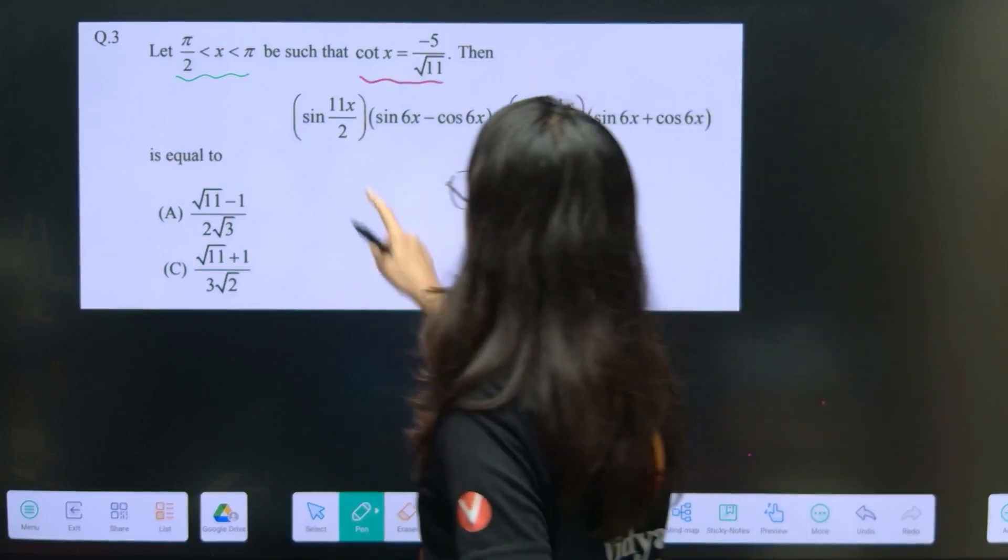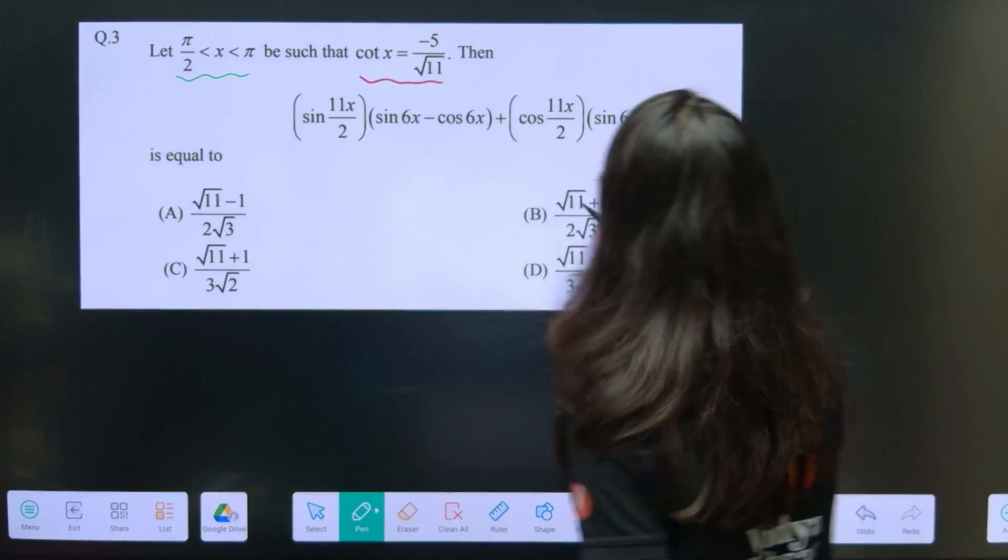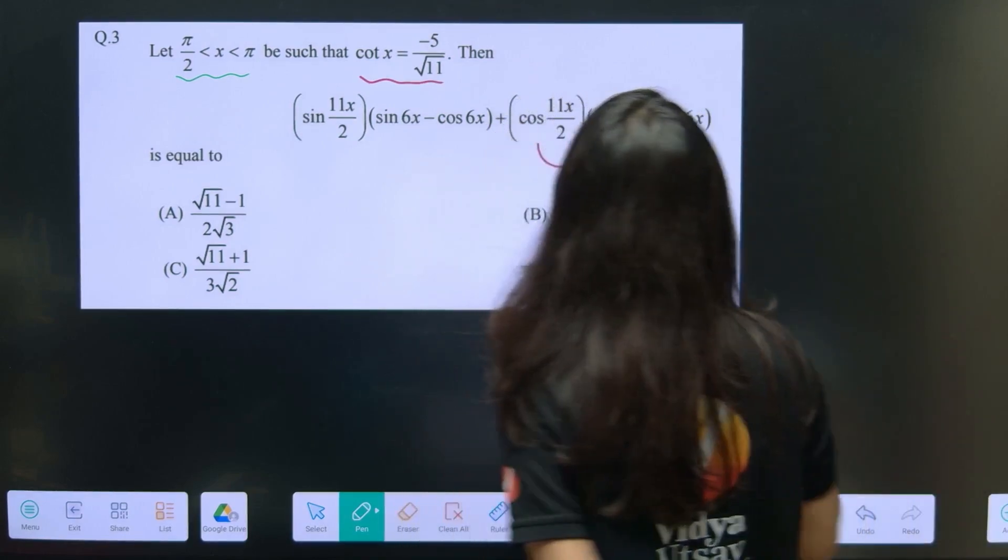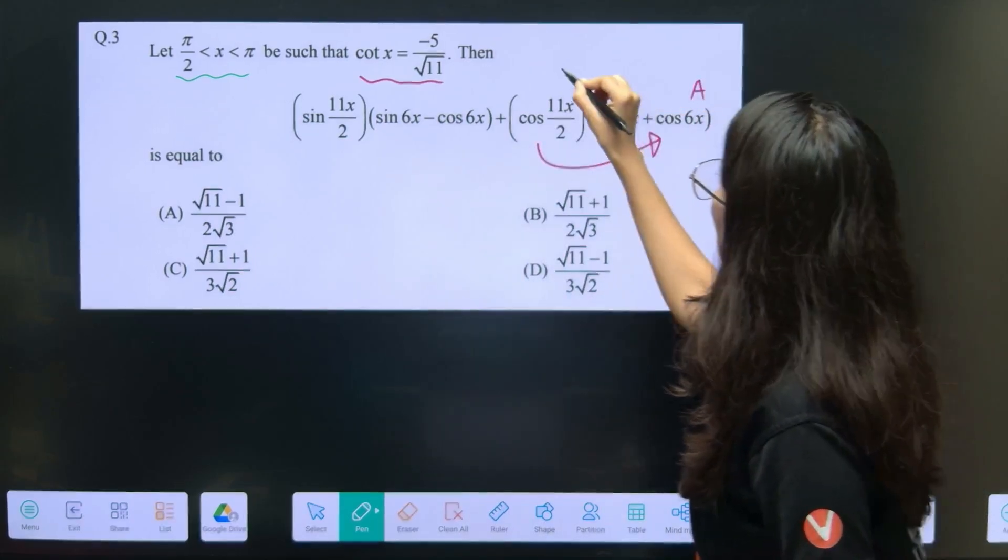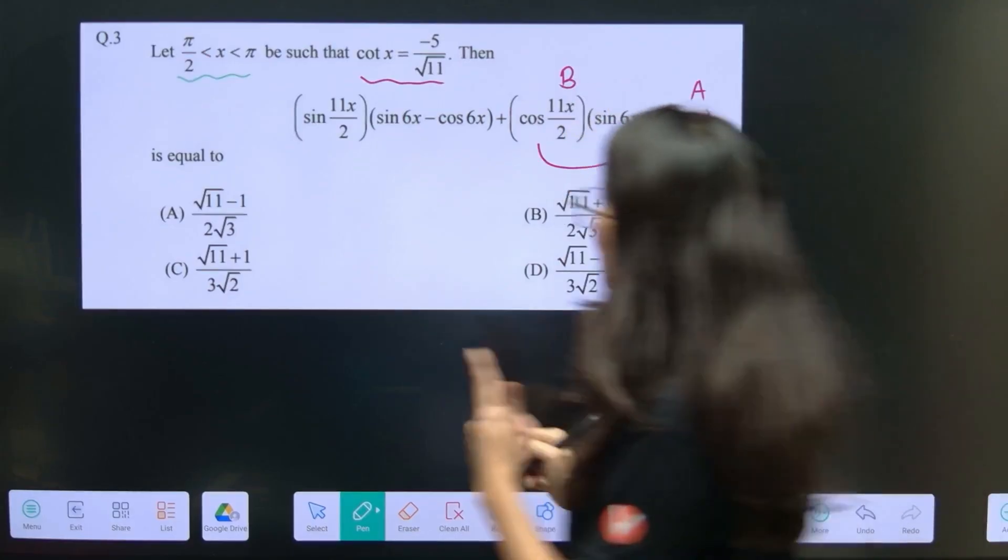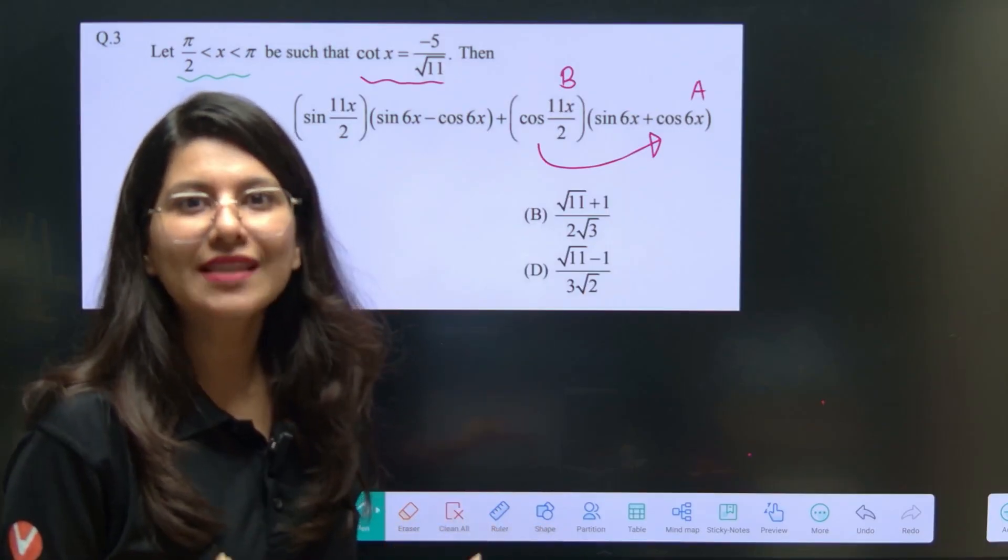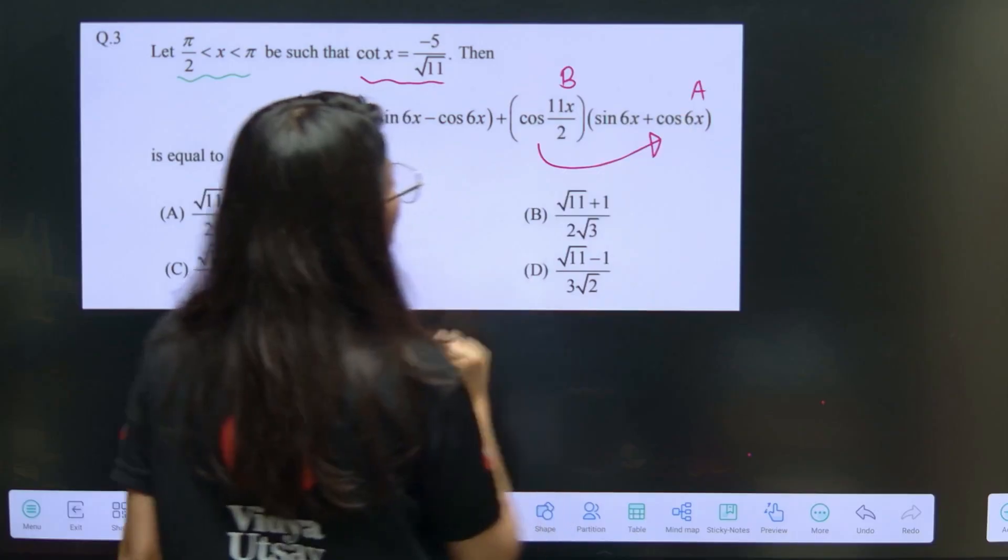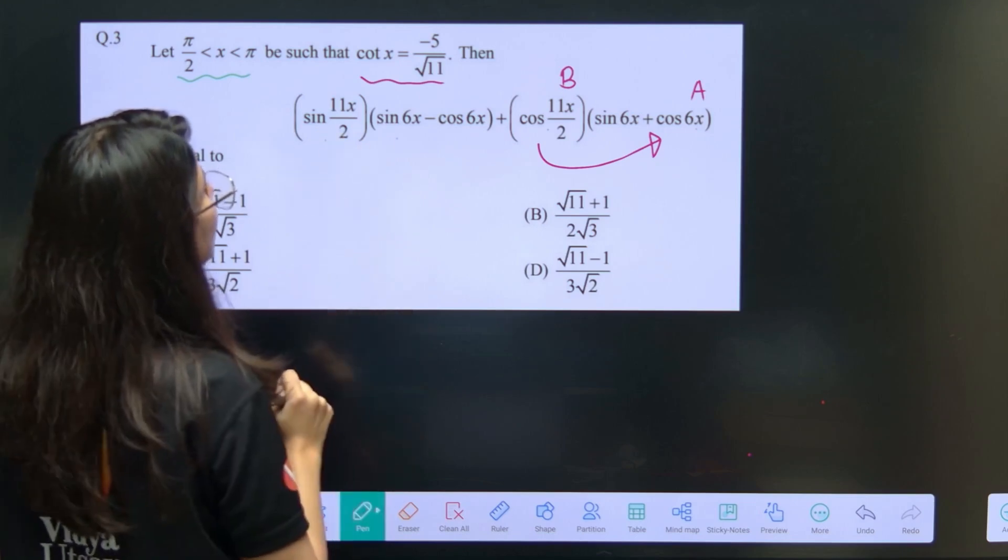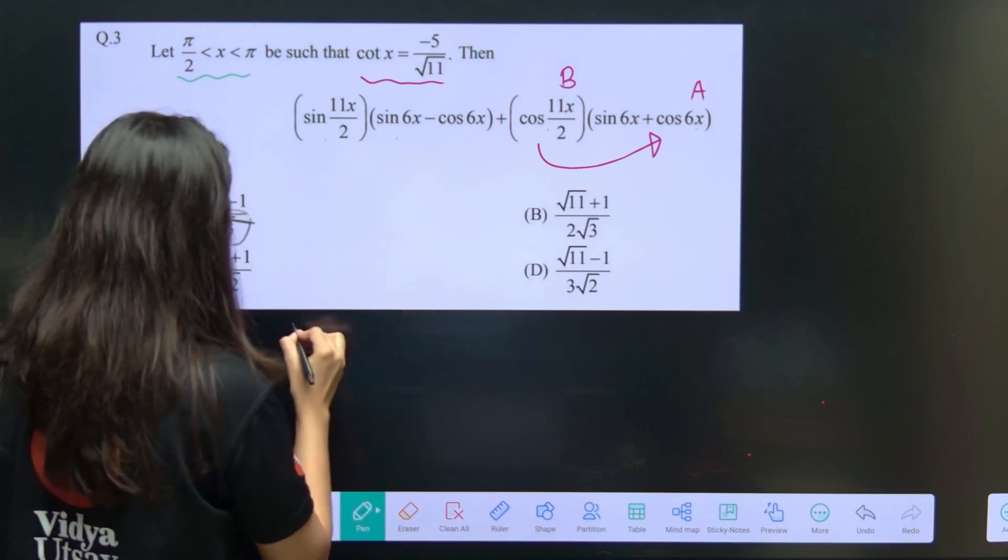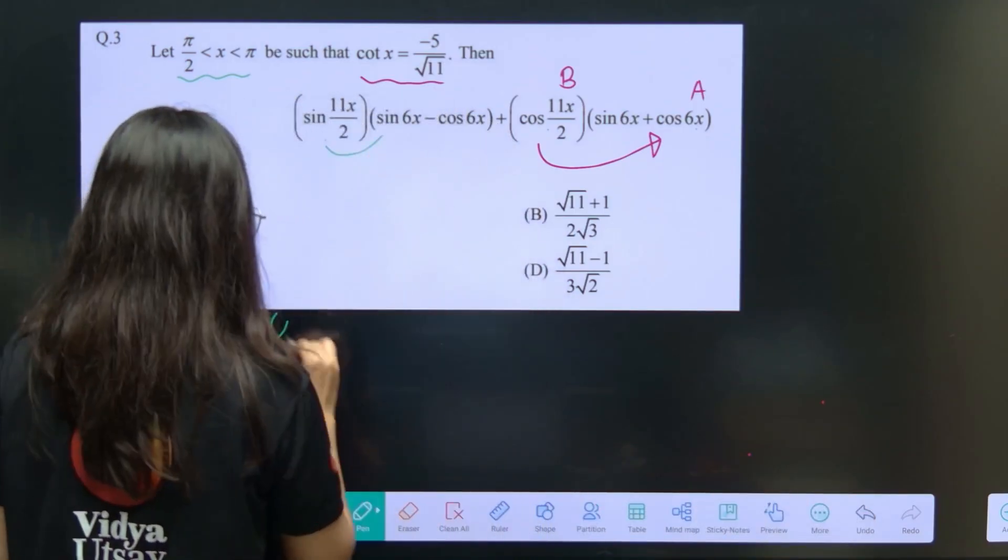If you observe this carefully, I can see that some formula is getting formed. Can you see? This is cos 11x by 2 times cos 6x, if you multiply these two you'll get cos 6x. So this is cos a cos b. And you know what? I need a sin a sin b because I know the formula. Cos a cos b plus sin a sin b is cos a minus b. So cos a cos b and this is sin a sin b. So cos a cos b plus sin a sin b will become cos a minus b.